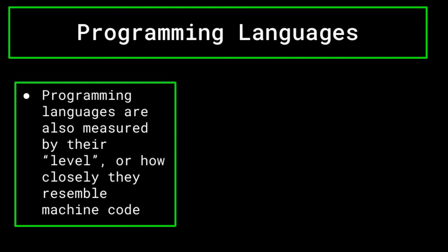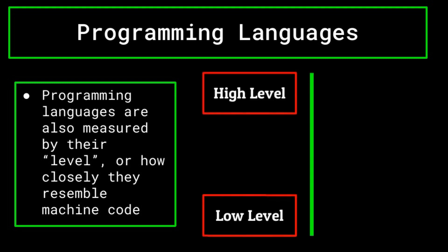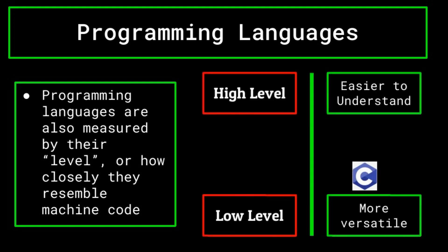Programming languages are also measured by their level, or how close they are to machine code. Low-level programming languages, such as C or assembly, resemble machine code much more closely than a high-level programming language, and thus can be more versatile, with the trade-off of being harder to understand at face value. Higher-level programming languages include Java and Python, and even a non-programmer could glean some idea of what a program written in a higher-level language is meant to do just by looking at it.